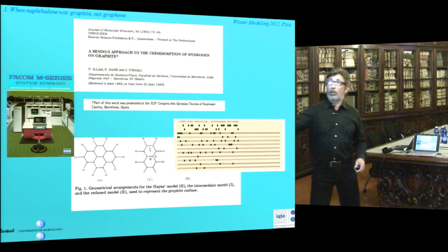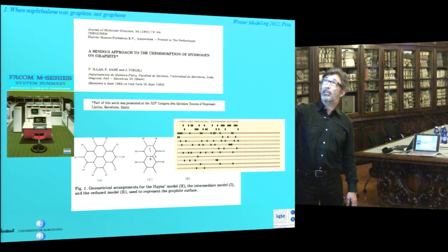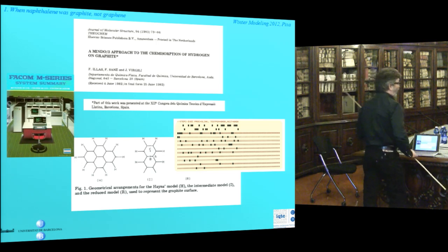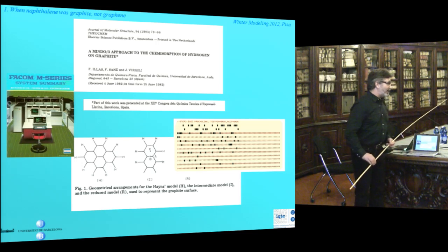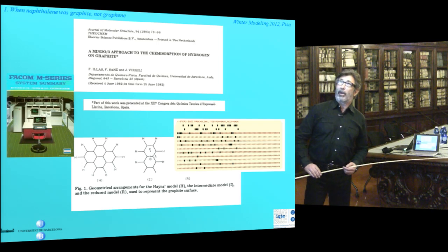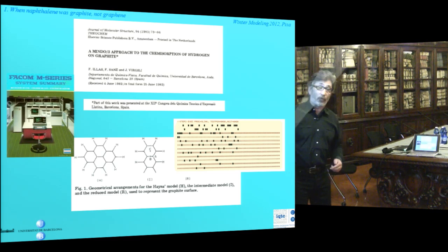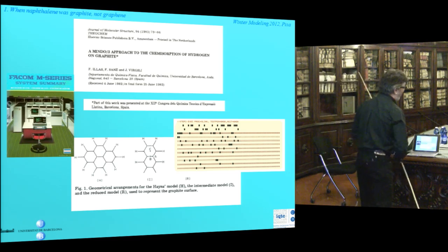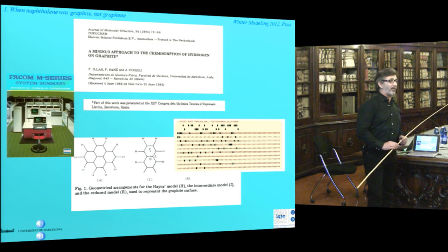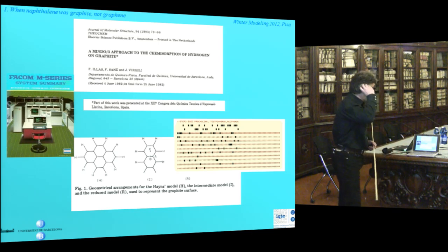When naphthalene was a model for graphite — this is actually one of my first papers. We were using this MINDO3. Density functional didn't exist at the time; it was a kind of semi-empirical method. I presented this as a poster — my first poster — at one of these meetings of theoretical chemists of Latin expression in Barcelona in 1981.